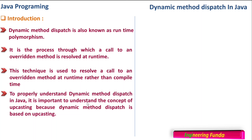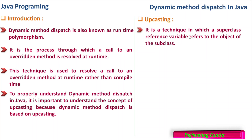To properly understand dynamic method dispatch in Java, it is important to understand the concept of upcasting, because dynamic method dispatch is based on upcasting. We know how we can do casting of one data type to another, but here we are doing casting in the upper direction. Upcasting is a technique in which a superclass reference variable refers to the object of the subclass — the parent class is referring to the child class.